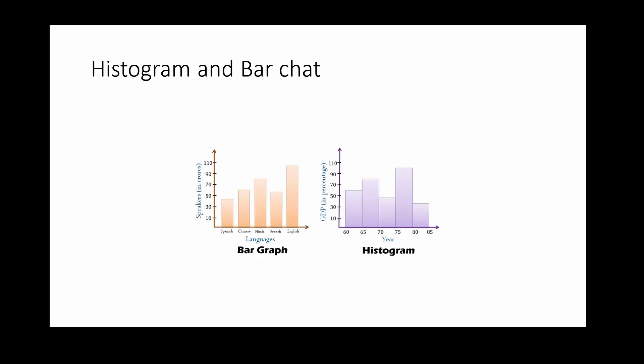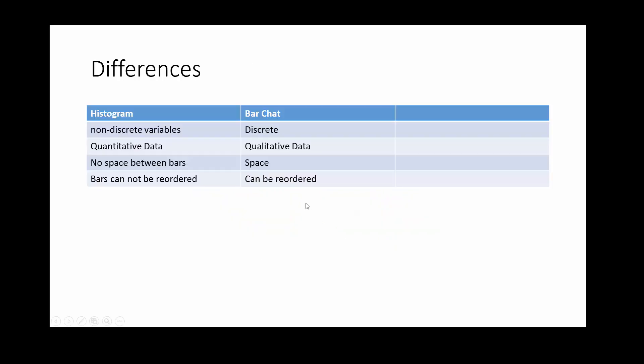So it's categorical data, not quantitative or continuous data. So these are some of the differences. I have listed down also in a table what the differences are. You can also take a look at this.